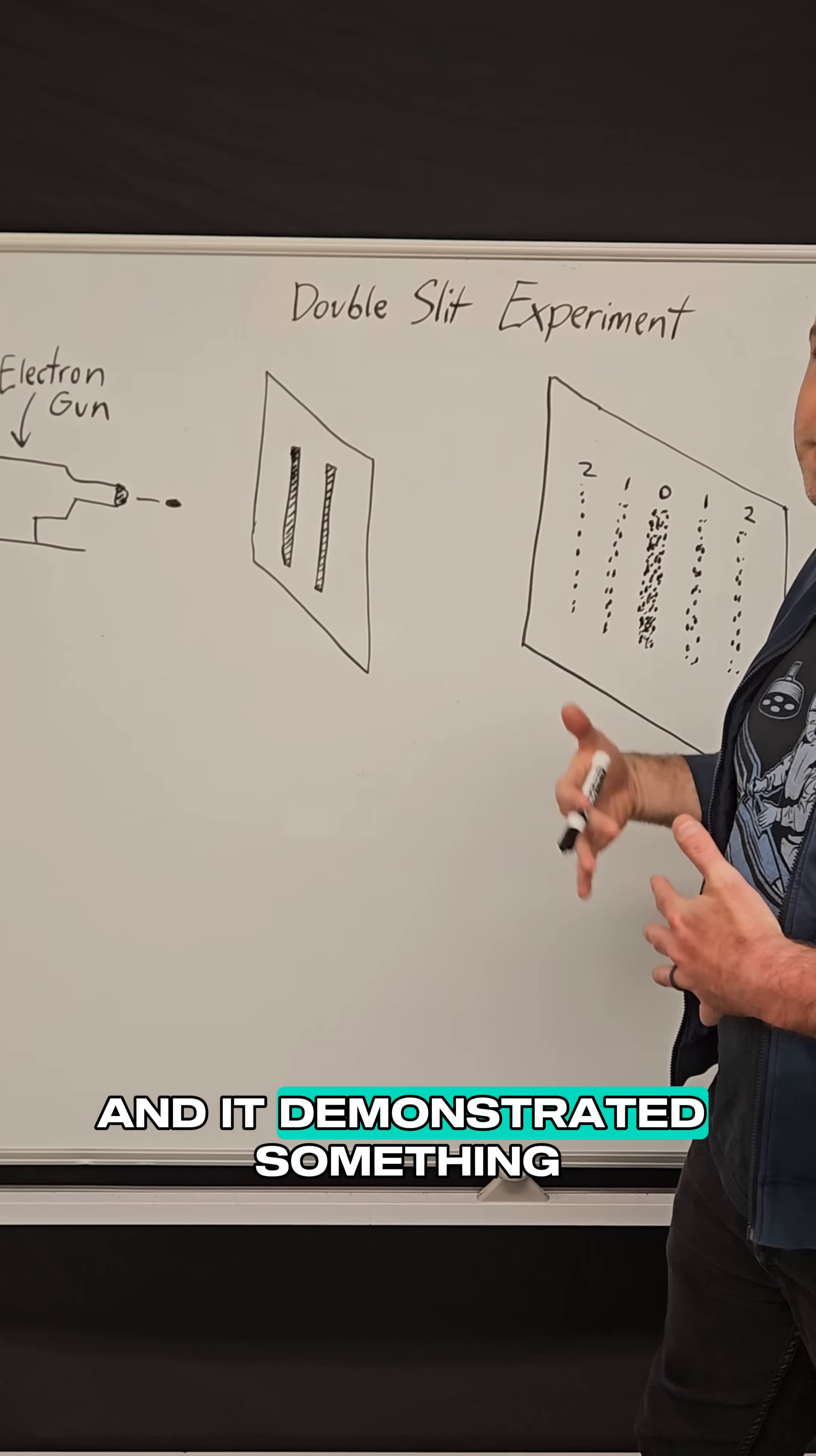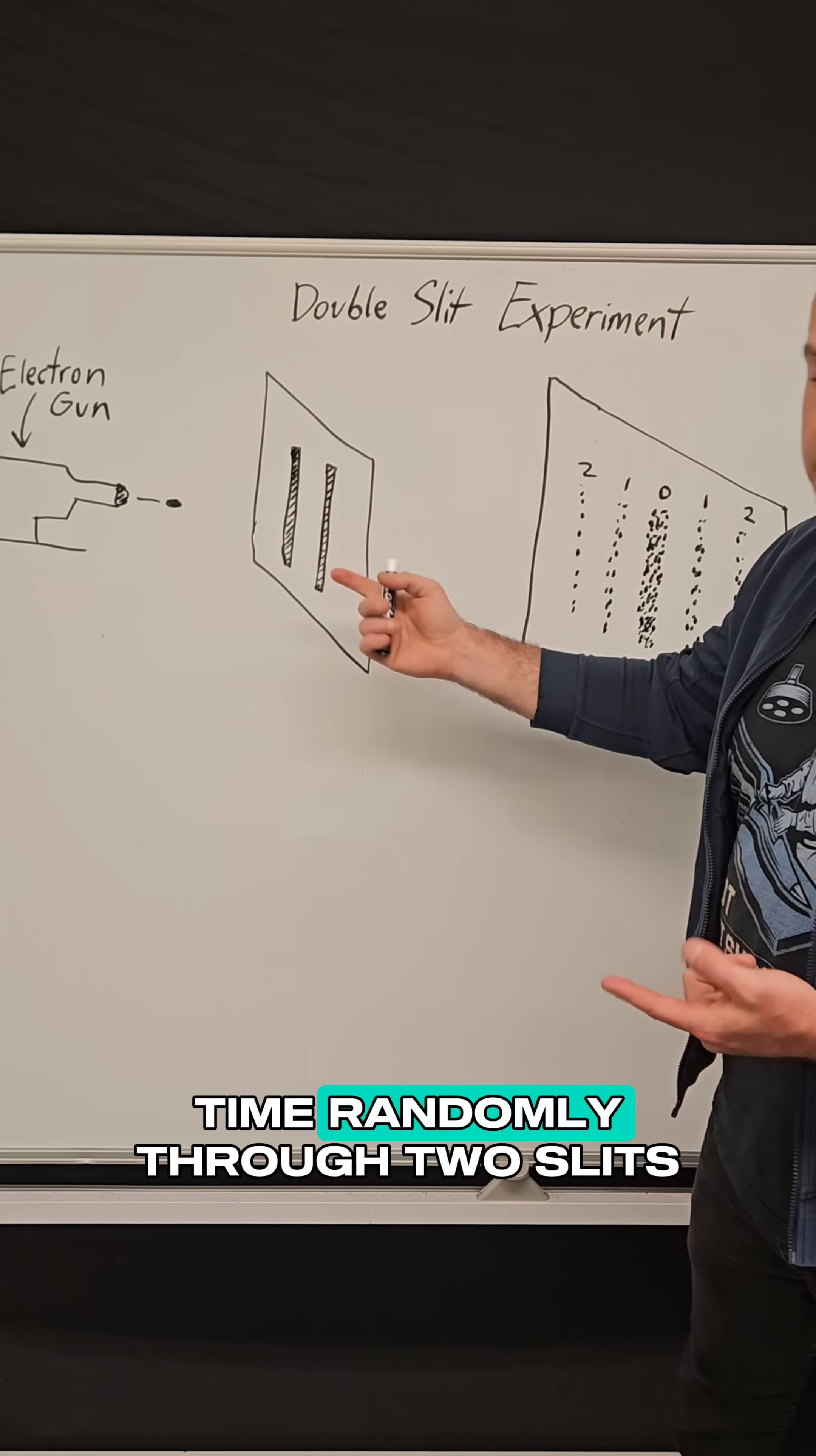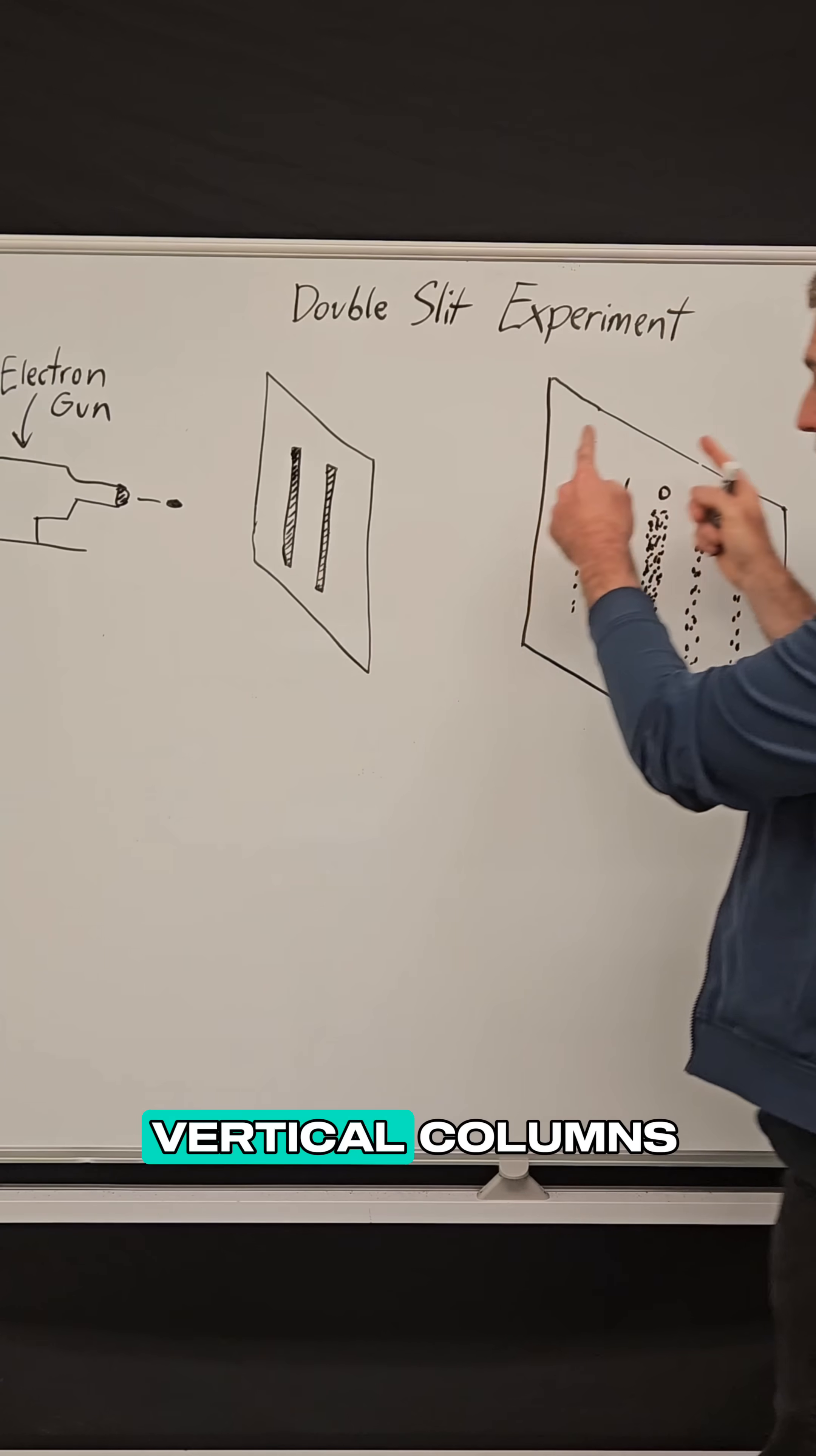This was done a long time ago and it demonstrated something very weird about quantum particles. What they did was they fired electrons one at a time randomly through two slits. And we would expect them to hit this back wall in two nice vertical columns because they're passing through two vertical columns.